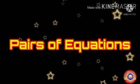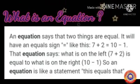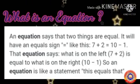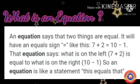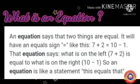You are very familiar with equations, aren't you? So, what is an equation? An equation says that two things are equal. It will have an equal sign, like this: 7 plus 2 equal to 10 minus 1. That equation says, what is on the left, 7 plus 2, is equal to what is on the right, 10 minus 1.